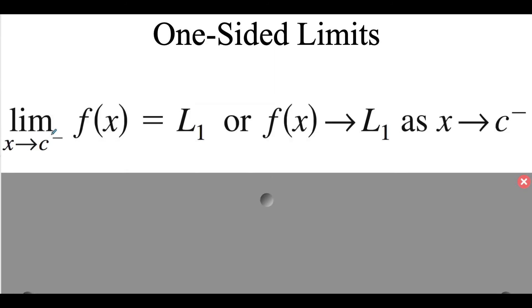When we're looking at one-sided limits, we're still going to be looking at what a function is doing as we approach a specific x value. But instead of looking at it coming in from both sides, we're going to look at it coming in from either the left side or the right side. So if we were looking at the limit of a specific function with x heading towards a constant, this little negative that looks like it's part of an exponent on that constant means that we're approaching that specific number from the left-hand side.